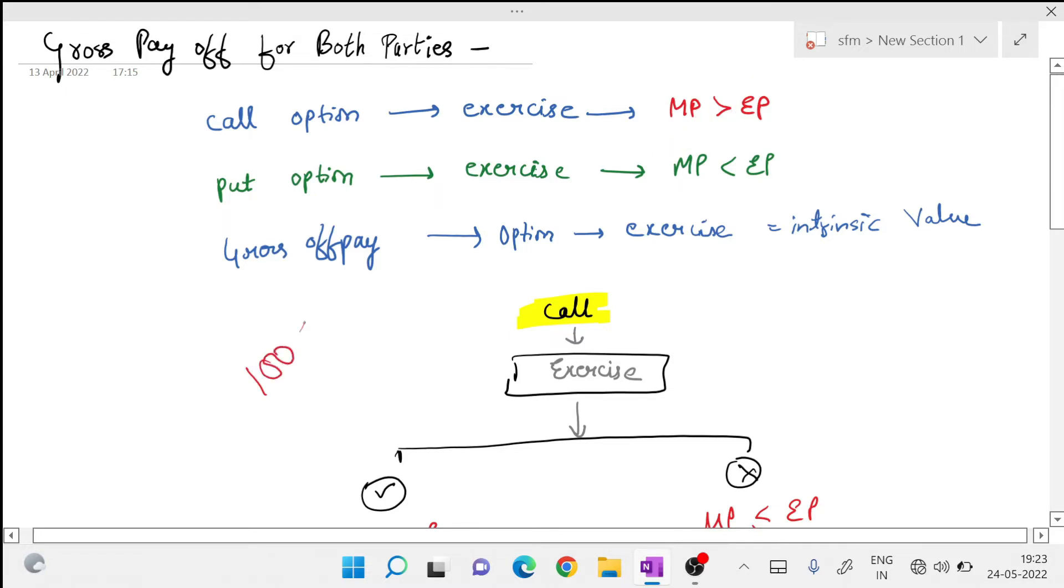Something is going on market for rupees 100, that is market price, and you have option to purchase it at 90. So will you purchase at 90 or 100? Tell me. Ma'am, we will purchase at 90. So guys, this is your option. This is a privilege which is given only to you. So this 90 is your exercise price.